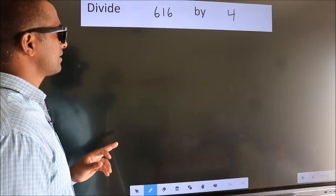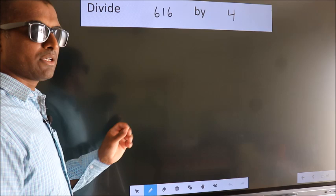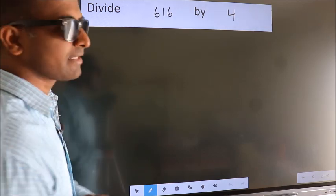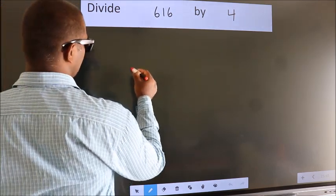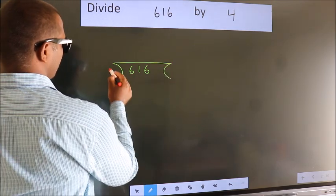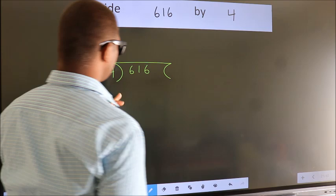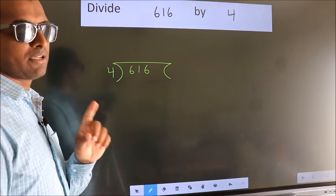Divide 616 by 4. To do this division, we should frame it in this way. 616 here, 4 here. This is your step 1.